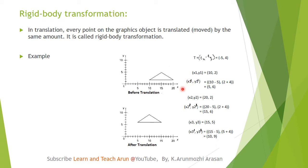For example, if we have 3 coordinate points, we will translate all of them. The tx, ty value is minus 5, 4. The three points are x1, y1 — which is 10, 2 — and x2, y2, and x3, y3. We translate all 3 points.